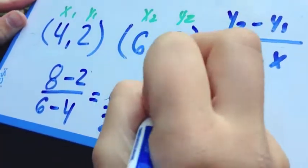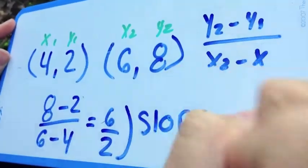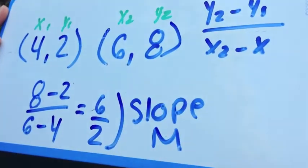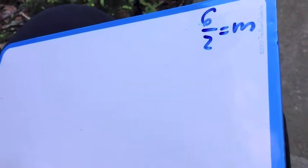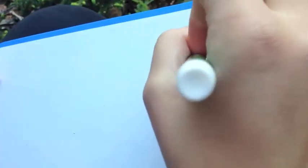This right here is our slope, otherwise known as m. We found our m, but now we have to reduce. To reduce, you have to divide 6 by 2. Can you tell me what that is? 3. Perfect! So really, your m is equal to 3.